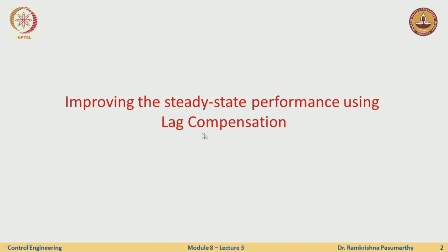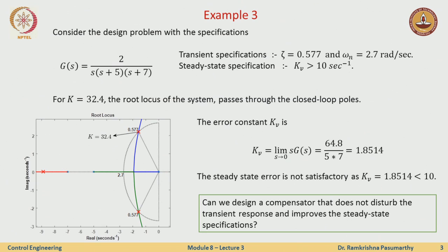This lecture focuses on lag compensation, which is an approximation of a PI controller. Starting with an example: given a plant with transient specifications of zeta equal to 0.5 and omega_n equal to 2.7, these are the transient specifications. The steady state specification requires kv greater than 10. Drawing the root locus, at a gain k of 32.4, the root locus passes through the dominant poles defined by these zeta and omega_n values. So we do not need to worry about transient specifications since the root locus already passes through those points by simple gain adjustment.